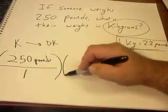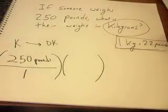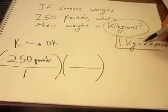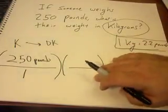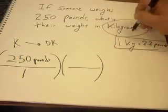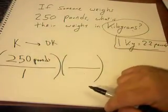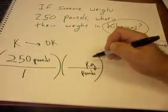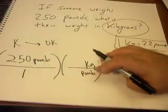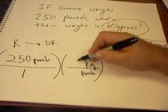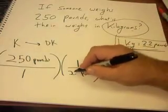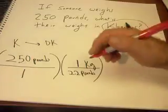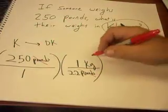I'm going to multiply my 250 pounds by my conversion factor. I've got 1 kilogram equals 2.2 pounds, set up as a fraction. I want pounds to go away and have kilograms in my answer, so pounds goes on the bottom and kilograms goes on top. So I have 1 kilogram over 2.2 pounds. Pounds on the bottom here cancel with pounds on top — kilograms are left over.